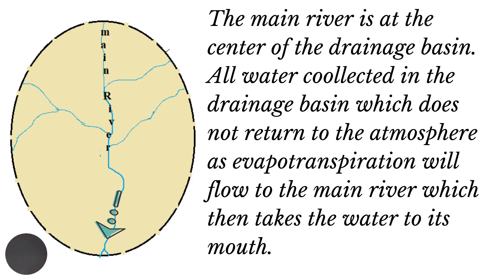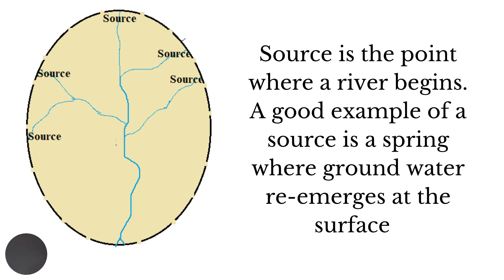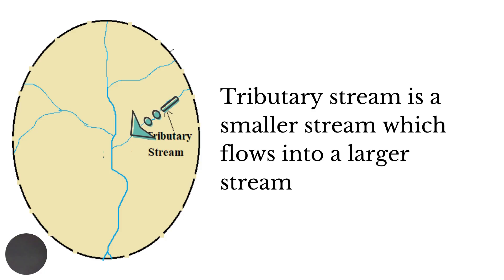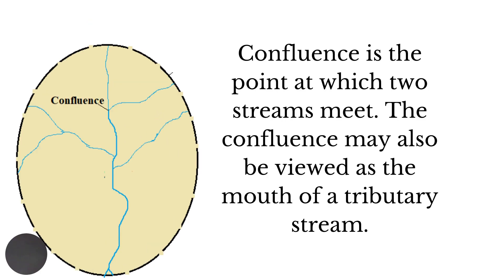From the main river, the water is transported to the mouth of the river. The source is the point where rivers begin; a good example of a source is a spring. The sources of rivers are usually found in highland areas where the watershed is. A small stream that flows into a larger stream is known as a tributary stream. Where two streams meet, that point is known as the confluence, which may also be viewed as the mouth of a tributary stream.